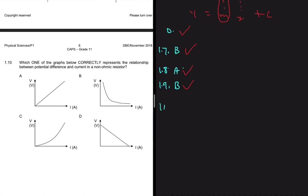Question 1.10 asks which graph correctly represents the relationship between potential difference and current in a non-ohmic resistor. If the question were about an ohmic resistor, the answer would be A (a straight line). Option B shows voltage increasing while current decreases — not possible. Option C looks like an ohmic resistor but is curved and exponential, which is exactly what a non-ohmic resistor graph looks like. The answer for 1.10 is C.